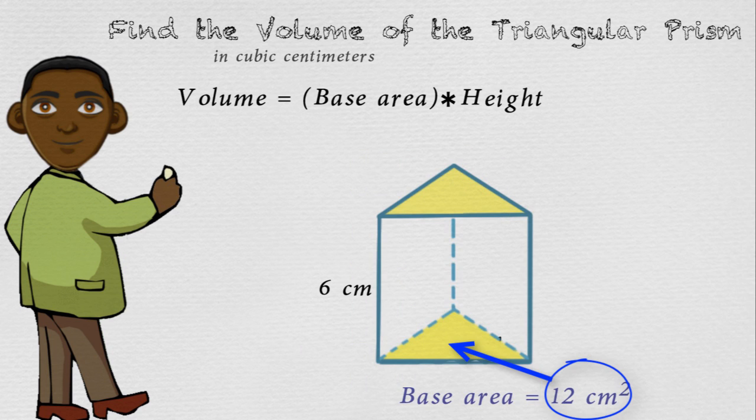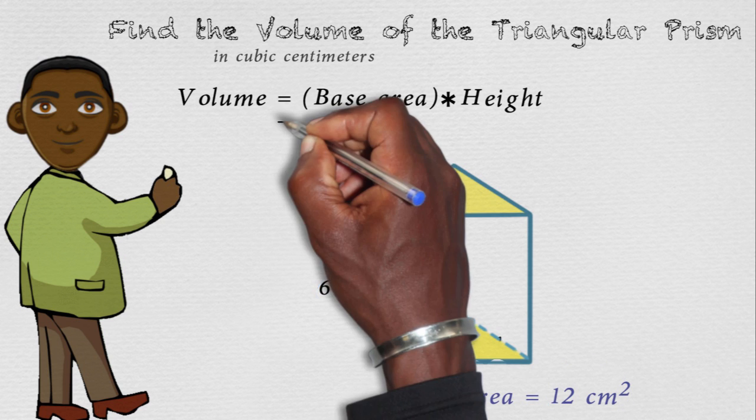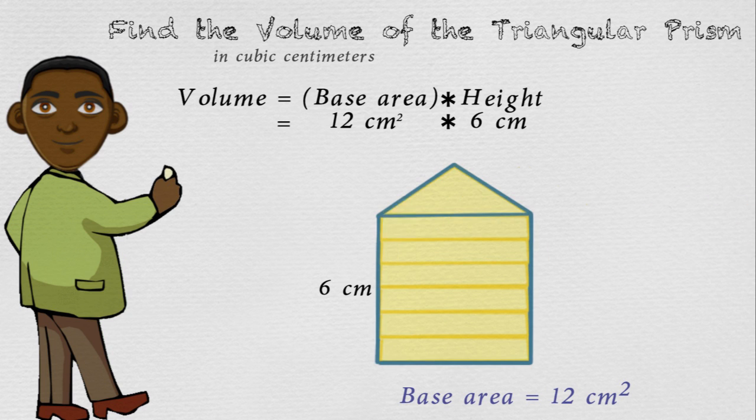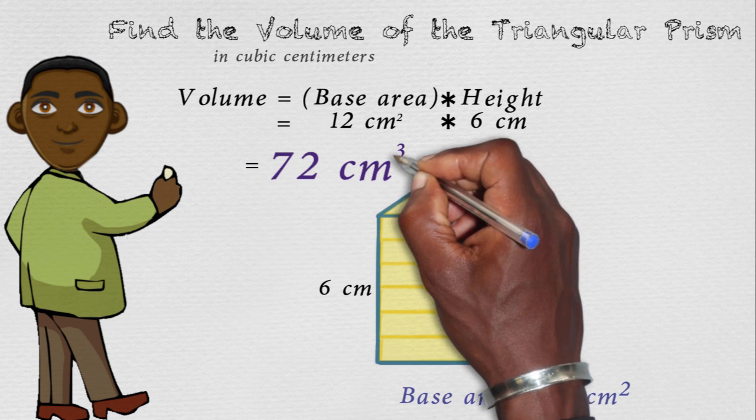Now that we know the area of our base, we multiply that times the height of the prism itself. The height is 6 centimeters. So we now have 12 centimeters squared times 6 centimeters in height, and we end up getting 72 cubic centimeters.